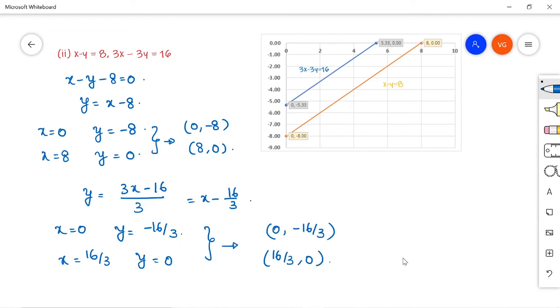So let us mark these points on the graph sheet here. So 8 comma 0 and 0 comma minus 8. Join these two points. It will form one straight line. This line represents x minus y is equal to 8.